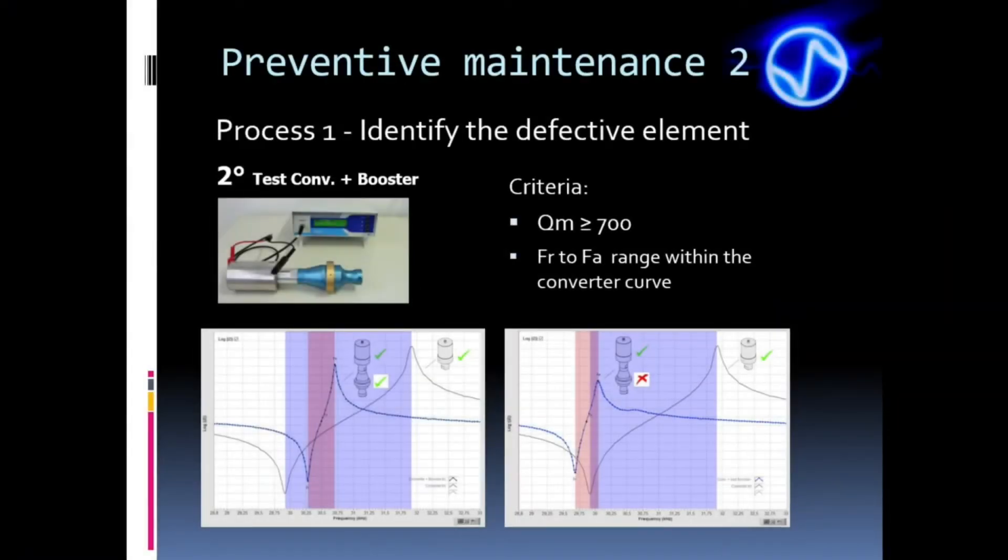The first basic criterion for the booster is QM greater than 700. To evaluate the frequency is necessary to compare the converter alone curve with the C plus B curve. The booster is approved by the frequency criterion when the range from FR to FA of the associated set is within the converter alone curve. In this image, we have the range of C plus B highlighted in red within the blue one, which is the converter alone range. So this booster passes in the frequency criterion. In this other image, the booster is failing because the red range, C plus B range, is out of the blue one.